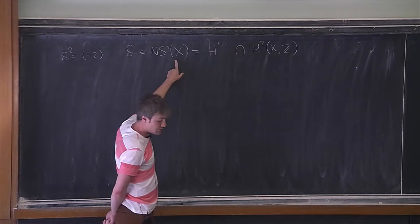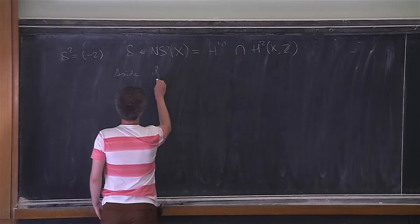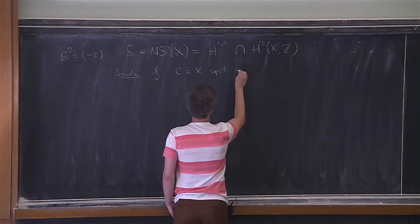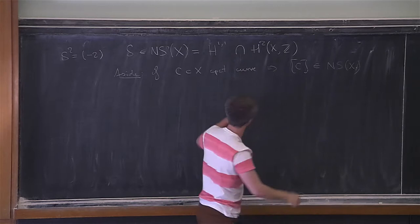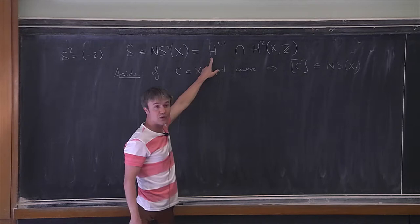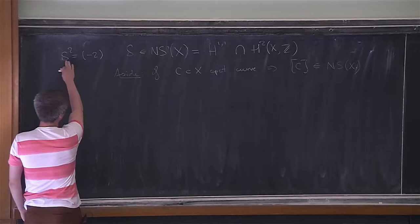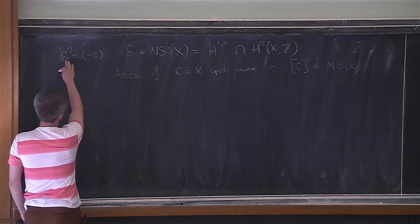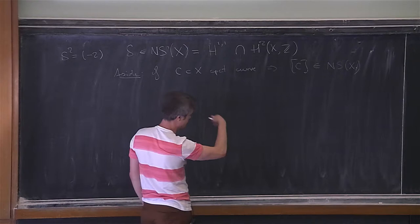The reason why this group is relevant is that if you have C inside X, a compact curve — meaning a compact Riemann surface — then the fundamental class of C belongs to the Néron-Severi group, meaning it lies both inside the integer lattice and inside the H^{1,1} subspace. This is why having a large Néron-Severi group is the same as having a lot of submanifolds inside your K3 surface. We are particularly interested in classes with square minus 2, which correspond essentially to P^1s, to rational lines on the K3 surface.